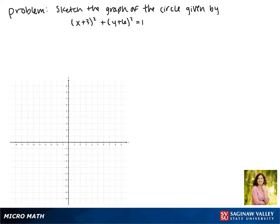Today we'll be graphing the circle given by the equation (x+3)² + (y+6)² = 1. We'll start by finding the center of our circle.